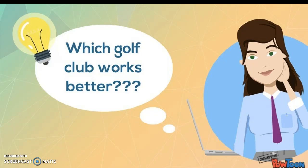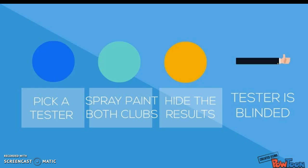Imagine you were a golfer wanting to see which of two clubs hit the ball further. You get someone to test the clubs, you spray the clubs black so that the tester doesn't know which club is which, and you blind the tester to the results of their swings. You have now blinded the tester and eliminated tons of bias.